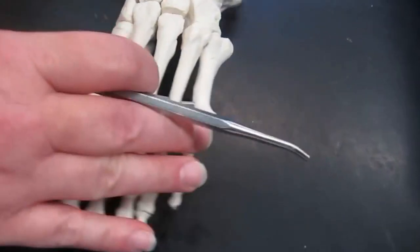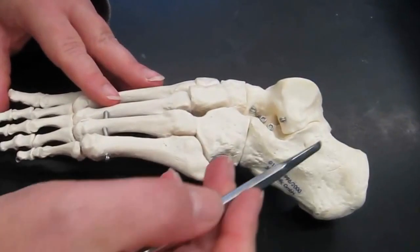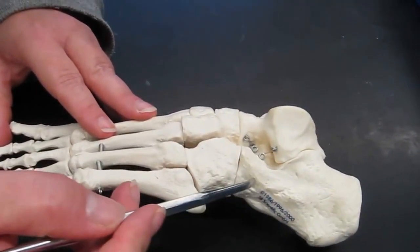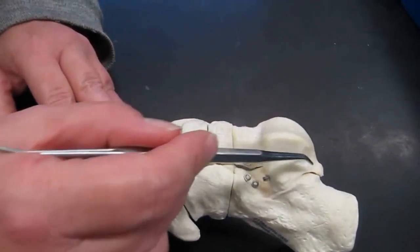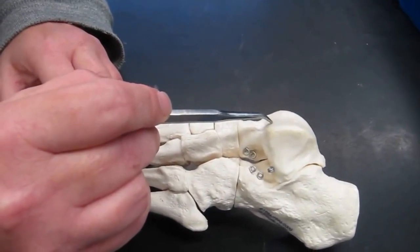The tarsal bones all have individual names just like the carpal bones. The large one that makes up the heel is the calcaneus. The one here that articulates to make the ankle joint, that is the talus.